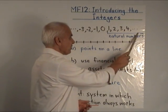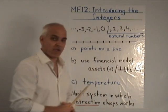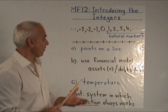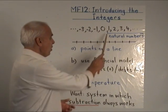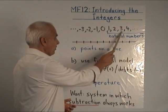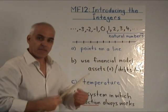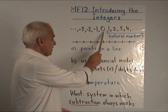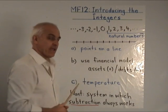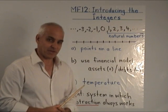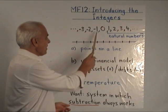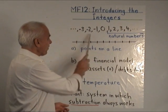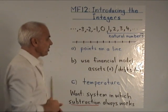Here are the natural numbers in Hindu-Arabic notation that we're already familiar with: one, two, three, and so on. To get the integers, we have to first augment with a number zero, and then the negatives of the natural numbers extending in this direction here.